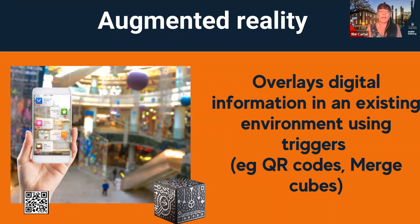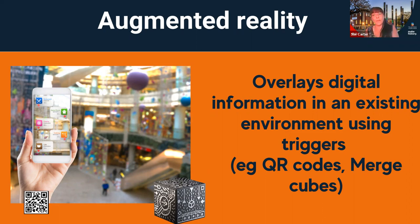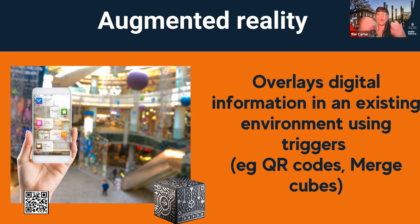What is augmented reality? It's where the real world is overlaid with digital information. You might see your existing environment, but through a trigger on the screen of a device you will actually see something that appears to be there but isn't. It's really superimposing information over a real world environment. You might be familiar with examples such as Pokémon Go, which includes geo-filters, or Snapchat, where you're putting something over your face — even face detection technology to log on to your device.